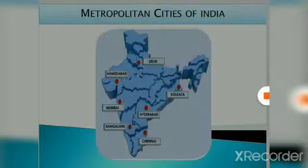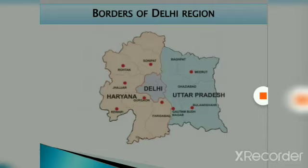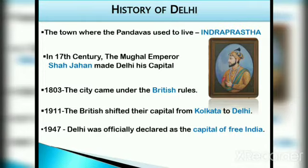Delhi shares its border with Uttar Pradesh in the east and with Haryana on the other three sides. In this map you can see that Delhi is in the middle, and on the right side, meaning in the east, there is Uttar Pradesh. The other three sides are covered by Haryana.